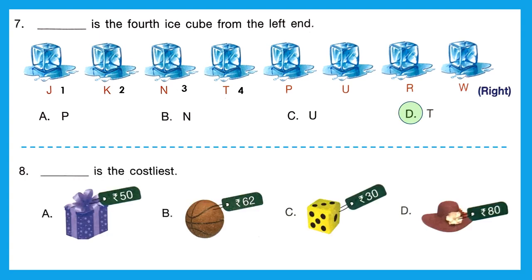Question 8: 'Dash is the costliest.' Costliest means the highest value. A costs 50 rupees, B (ball) costs 62 rupees, C (dice) costs 30 rupees, and D (hat) costs 80 rupees. Out of 50, 62, 30, and 80, the greatest is 80. So the right option is D.